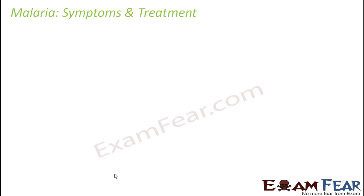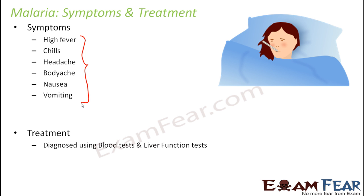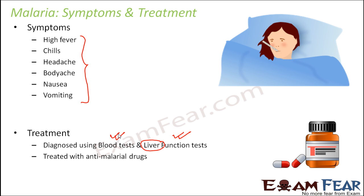The symptoms of malaria include high fever, chills, headache, body ache, nausea, and vomiting — all arising due to the release of the toxic chemical hemozoin when RBCs are ruptured. For diagnosis, since fever also occurs in typhoid, diagnostic tests are needed: blood tests and liver function tests, since the liver is the organ most impacted. If confirmed, malaria is treated with anti-malarial drugs, which help in curing the disease.